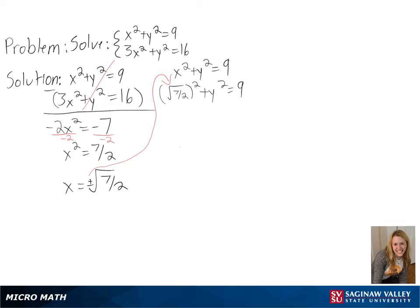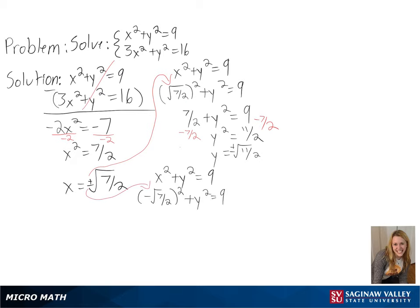Then we can work on plugging these back into our equations to solve for y. So when x is a positive square root of 7 over 2, y is a positive or negative square root of 11 over 2.